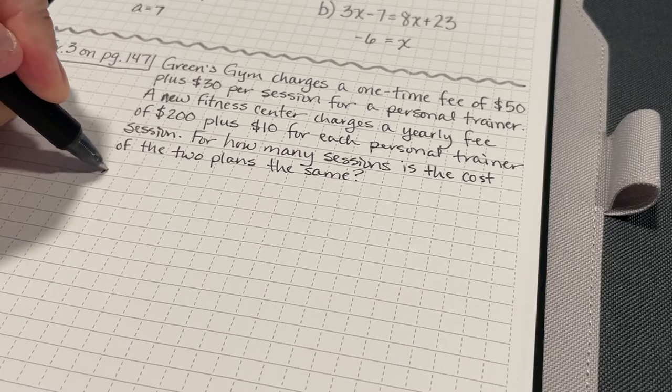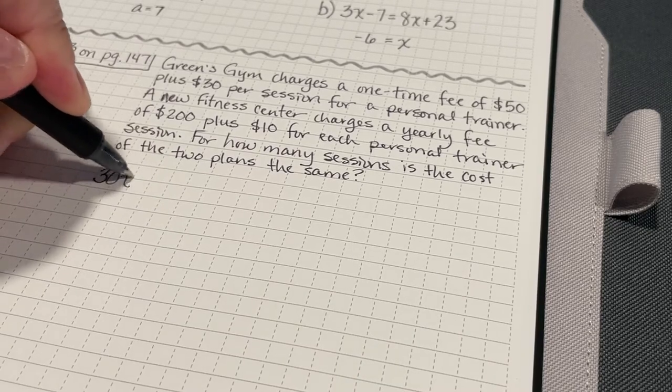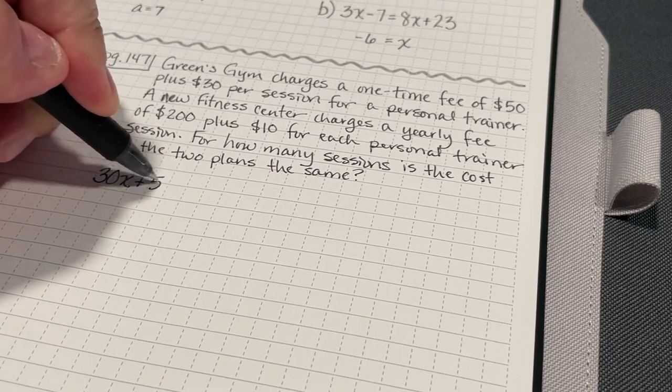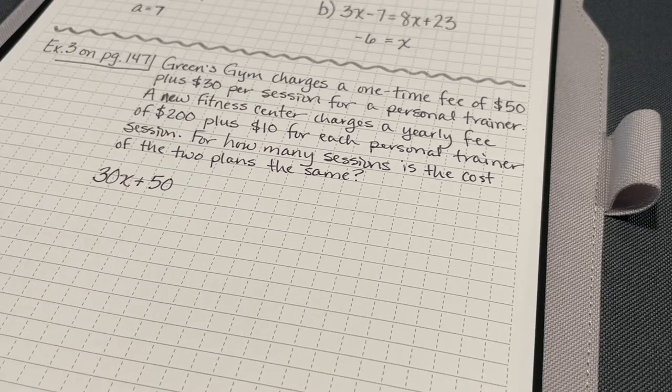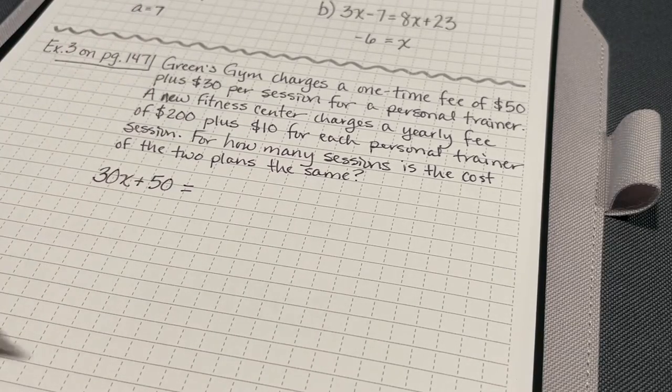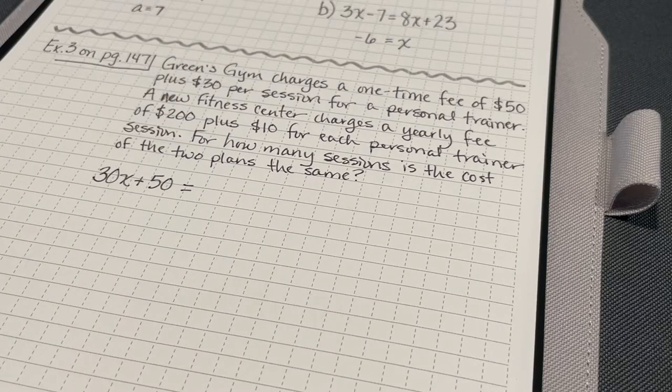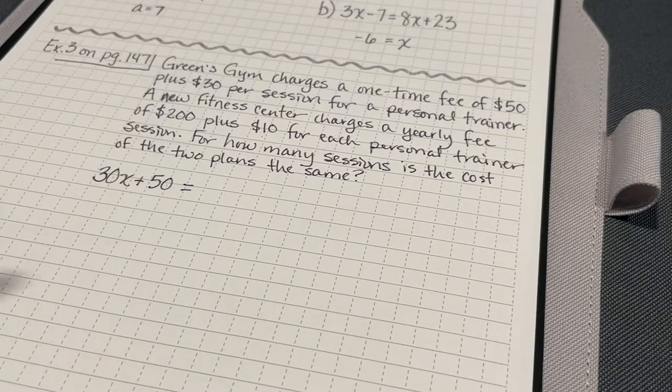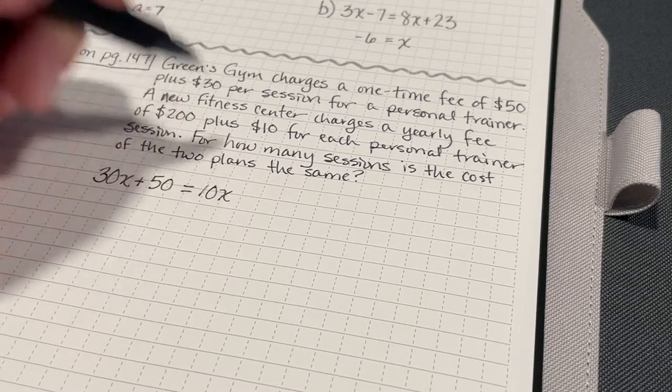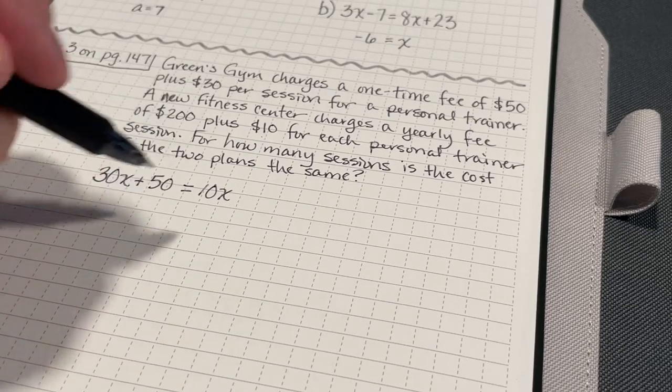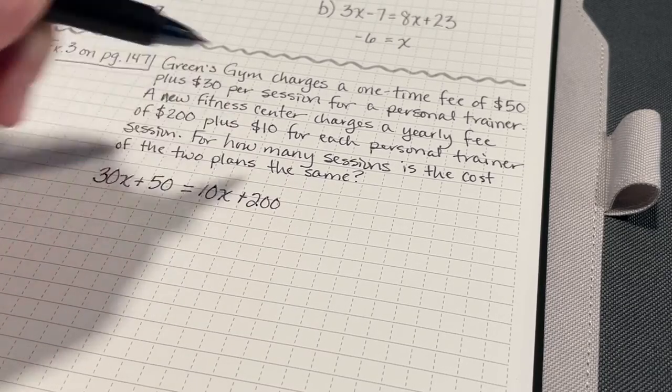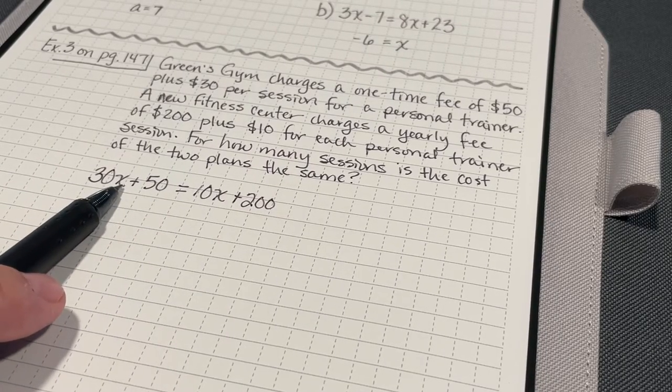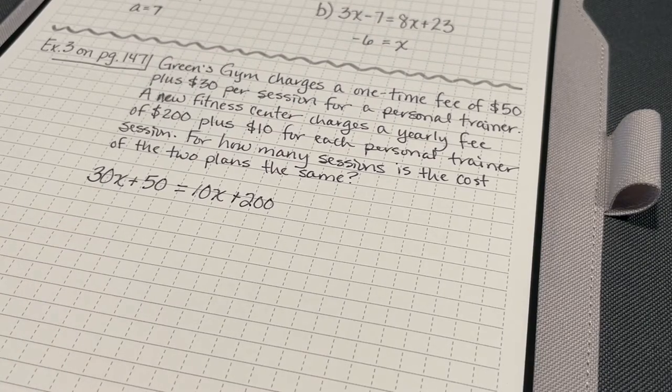So, I'm just going to make my sessions be equal to x. So, I'm going to say 30 times x. So, 30 times the number of sessions, $30 times the number of sessions, plus $50. This is going to equal what the other fitness center charges. So, I've got $10 per session with the personal trainer. So, that's going to be 10x plus my 200. Now, the solution to this is going to be whatever x equals, and that's going to be the number of sessions where they're the same price.